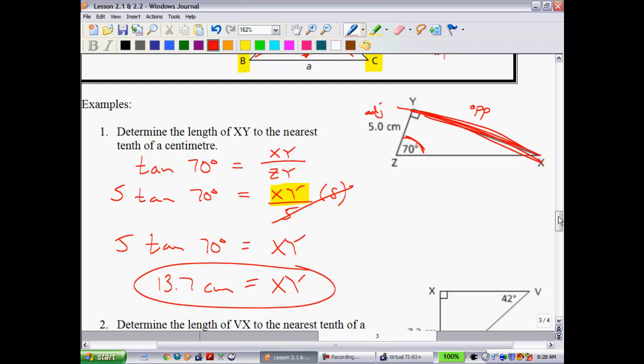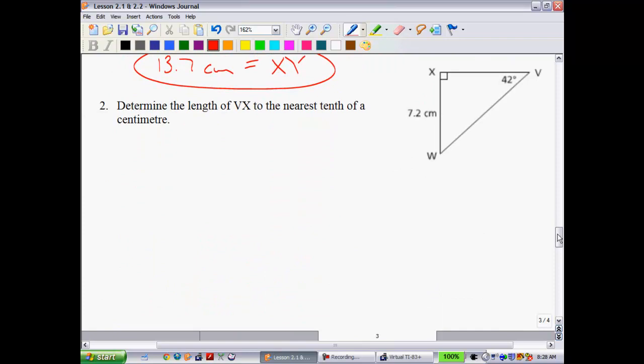So that's how those ones will work. Let's try another one. This one might be a good one for you to try on your own here, just to make sure you're doing these okay. So determine the length of VX. So VX would be this side. They give you this as your reference angle. So you always start out with the information that you have. So we're going to go with the tangent of the angle that I have, 42 degrees.